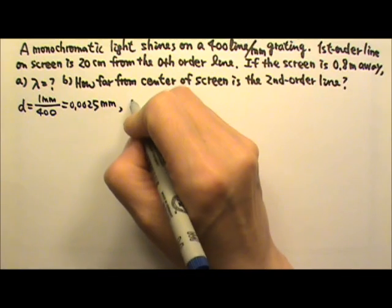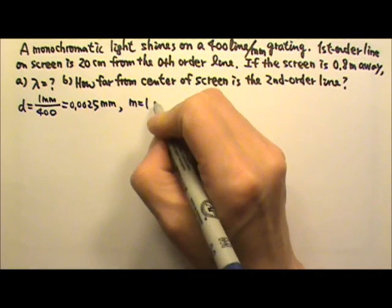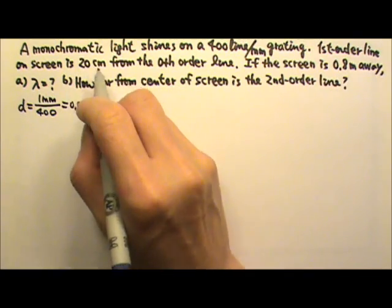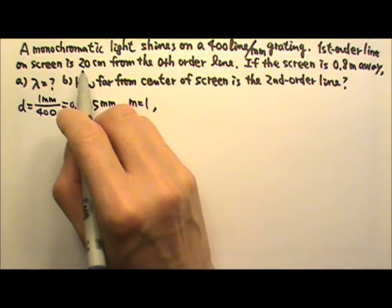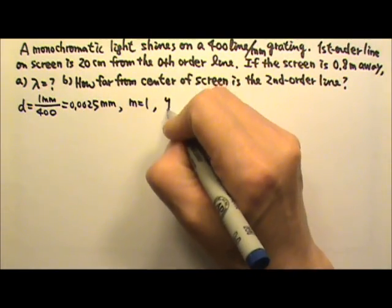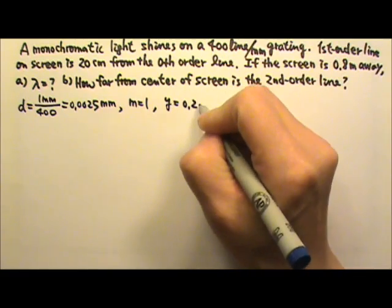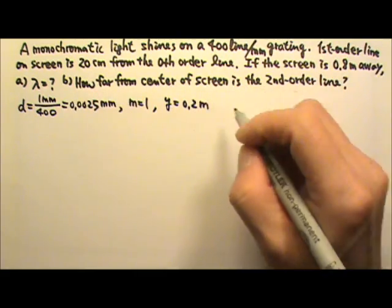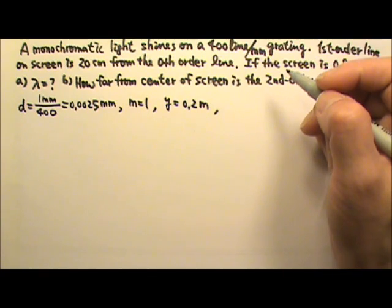The first order line, M equals to 1, is 20 cm from the zeroth order line. So it's 20 cm from the center of the screen. So Y is 0.2 meters, 20 cm. The distance on the screen is the Y.